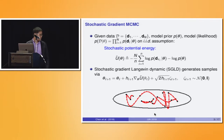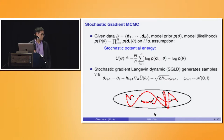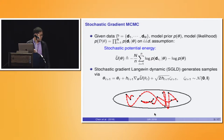Probably the simplest SGMCMC method is Stochastic Gradient Langevin Dynamics, which is essentially very similar to Stochastic Gradient Descent for optimization, except that for each iteration, in addition to following the stochastic gradient direction, we also add noise zeta, which is a random sample from a Gaussian distribution, with h being the step size.